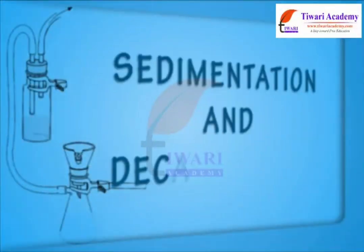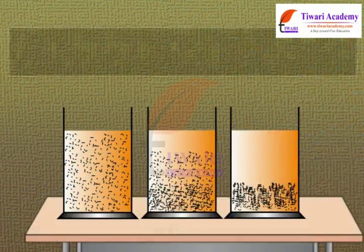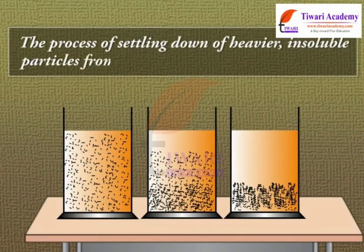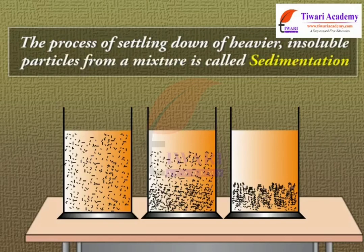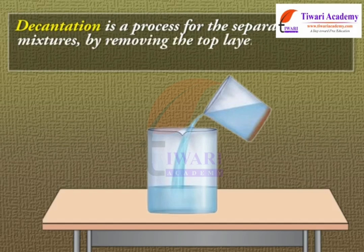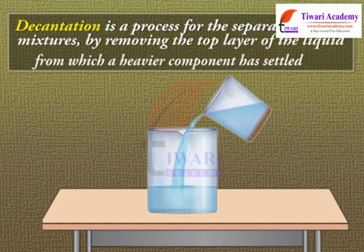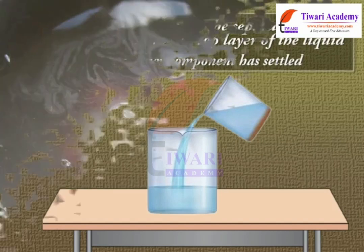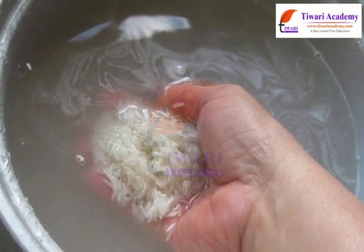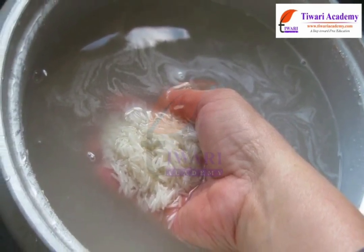Sedimentation and decantation. The process of settling down of heavier insoluble particles from a mixture is called sedimentation. Decantation is a process for the separation of mixtures by removing the top layer of the liquid from which a heavier component has settled. Lighter impurities like dust or soil particles in rice or pulses are removed by sedimentation.